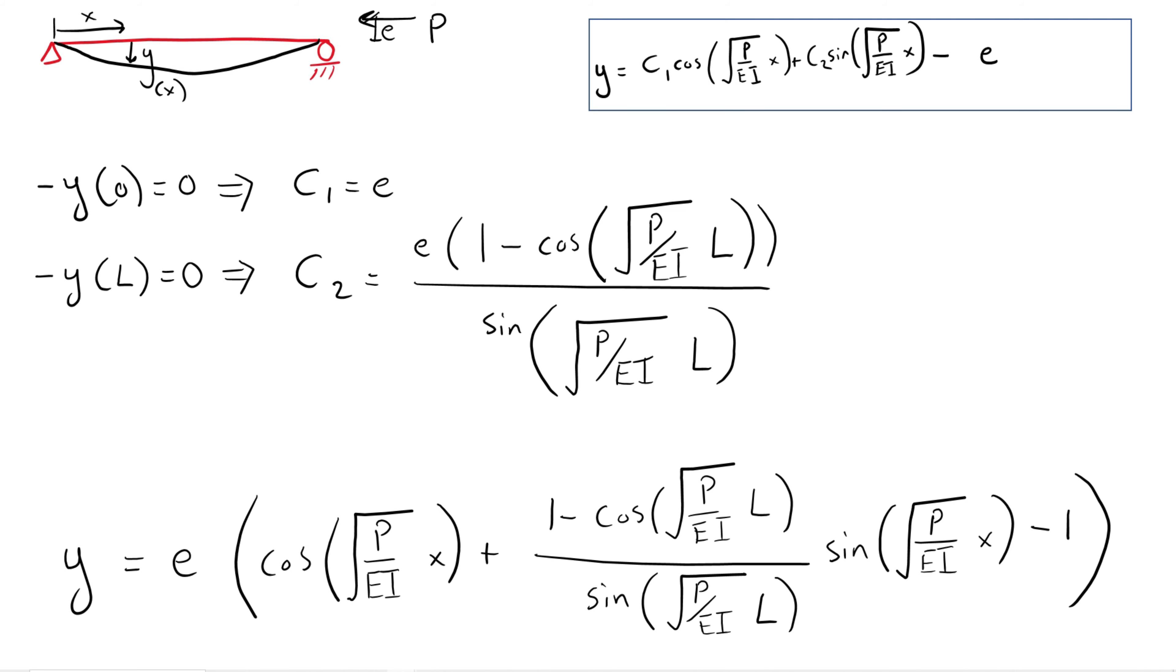By enforcing the boundary conditions of the vertical displacements at the end of the beam, we obtain the values for both constants as follows. Notice that here we obtained a fully defined solution. The mathematical reason is that this is a non-homogeneous problem. The physical meaning is that there is a deflection in the beam due to the applied external moment, and the configuration is already known.